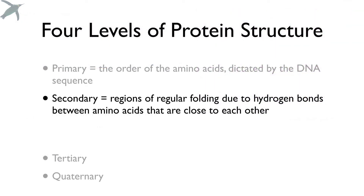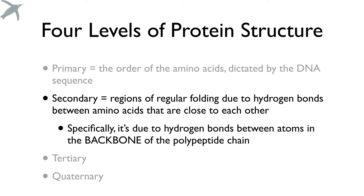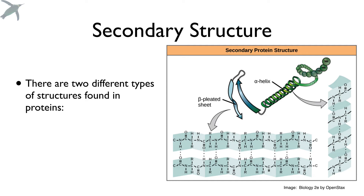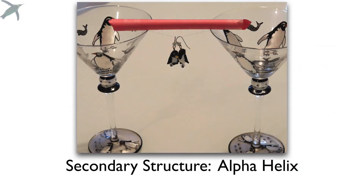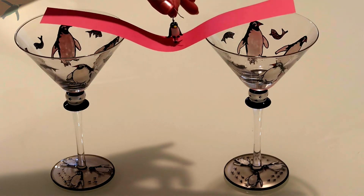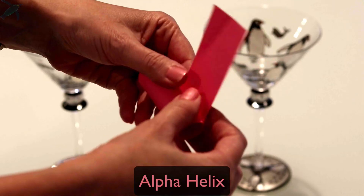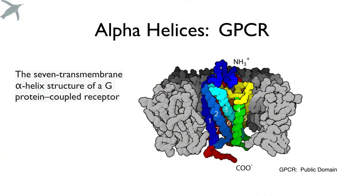The next level of protein structure we call secondary. These are regions of regular folding due to hydrogen bonds between amino acids that are close to each other — specifically bonds between atoms in the backbone, not the side chain; we're talking about the amine and carboxylic acid groups. Two different types: alpha helices and beta sheets. If the primary structure is like a wet noodle — just a chain of amino acids with no shape — look what happens when I roll it up into an alpha helix: now it's really rigid and strong. Alpha helices provide tremendous structure to proteins.